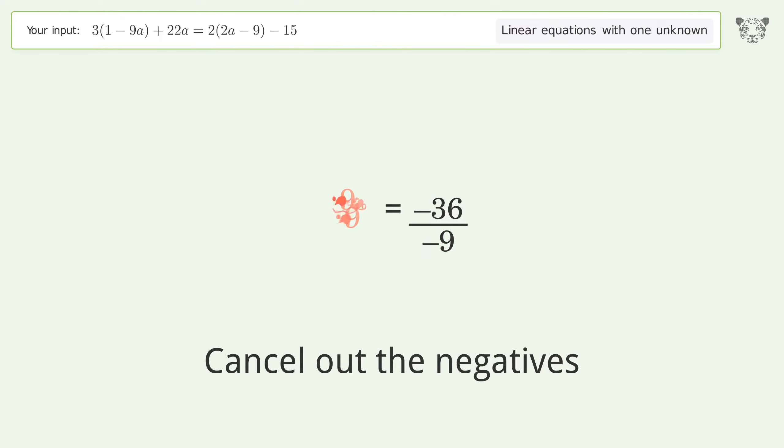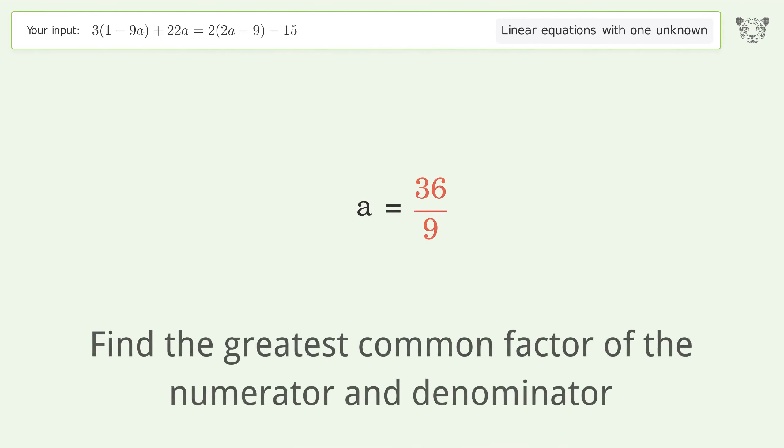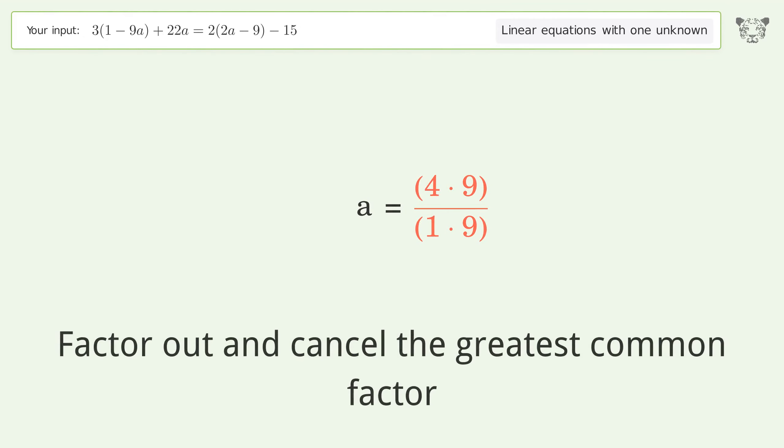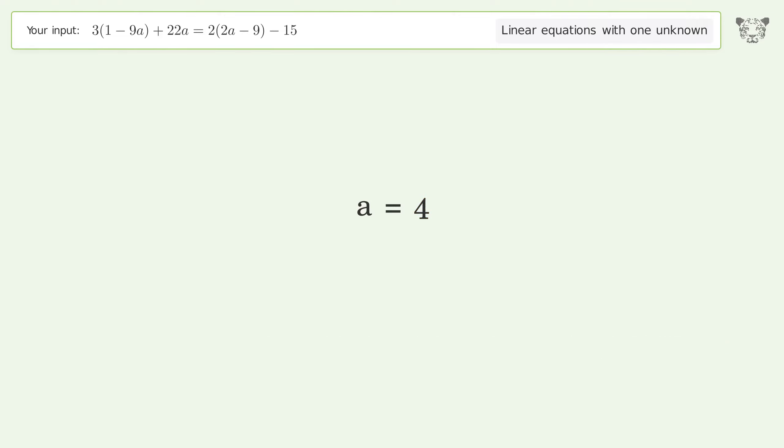Group like terms, simplify the fraction. Cancel out the negatives. Find the greatest common factor of the numerator and denominator. Factor out and cancel the greatest common factor. Factor out, and so the final result is a equals 4.